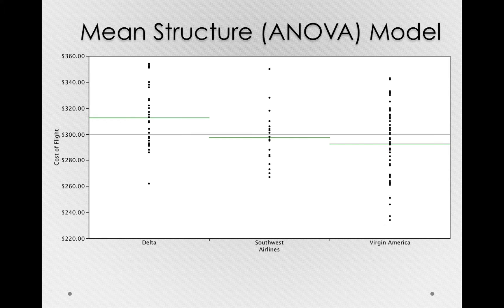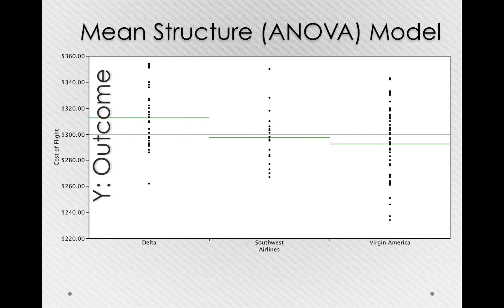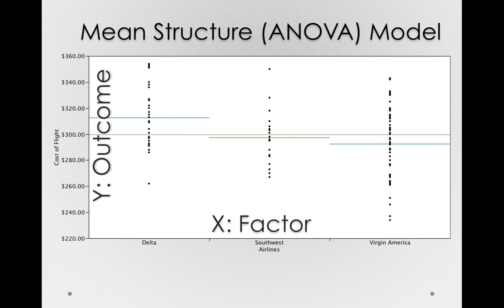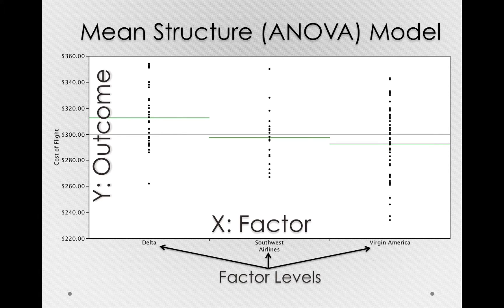But they're really models in which we're interested in modeling the structure of the different means. Now again in this case we'll call the y variable the outcome variable, but in this case we'll call the x variable a factor. This is the factor of airline. And the different airlines we measured are the levels of that factor. So delta, southwest, and virgin are each levels of the factor of airline.